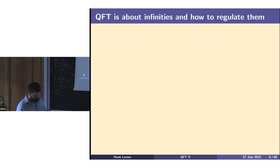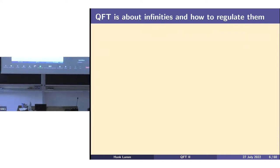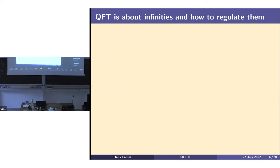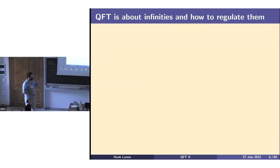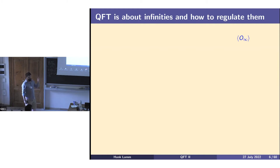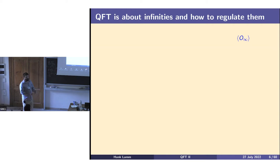Let's actually talk about field theory. Quantum field theories are all about infinities and how to regulate them — that's what makes them uniquely different from quantum mechanics. You have divergences and infinities, and you need to think about how to deal with these, both in order to put them onto a finite quantum computer and to solve your quantum field theory problems. At the fundamental level, there is one physical observable value you should get in the continuum when all regulators have been removed properly.